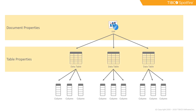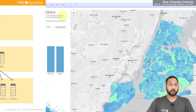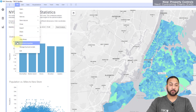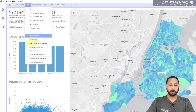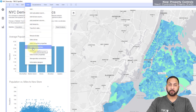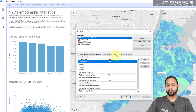A data table property exists at the data table level and is only visible to that data table, not to other data tables in your analysis. A column property exists at the column level and is not visible to other columns, including columns in other data tables. Since document properties are accessible to the entire visual analysis, it's typically what we'll use, though there are situations where table and column properties will be used. Document properties are located in File > Document Properties, and data table and column properties are in the Data menu.